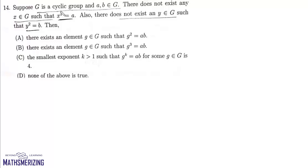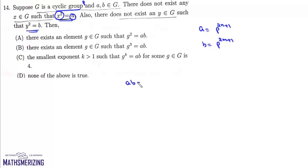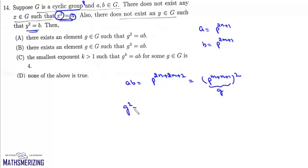Question 14: suppose G is a cyclic group generated by P, with A and B in G. There is no X with X squared equals A, and no Y with Y squared equals B. So A must be an odd power of P: A equals P to the power 2N plus 1, and similarly B equals P to the power 2M plus 1. Then AB equals P to the power 2(M plus N plus 1), which is P to the power M plus N plus 1 whole squared. So there exists G in G such that G squared equals AB, and that's option A.